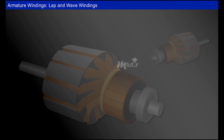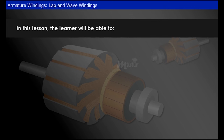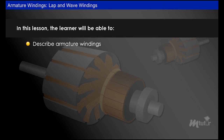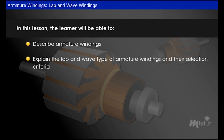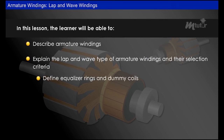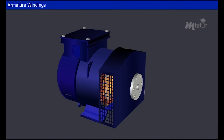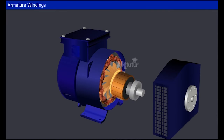Armature windings: lap and wave windings. In this lesson, the learner will be able to describe armature windings, explain the lap and wave types of armature windings and their selection criteria, and define equalizer rings and dummy coils.